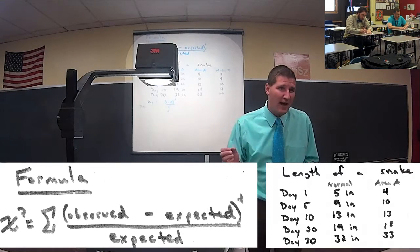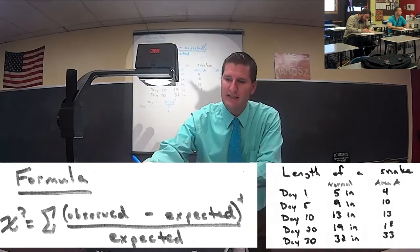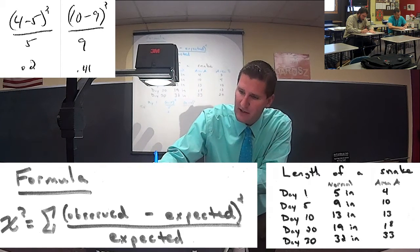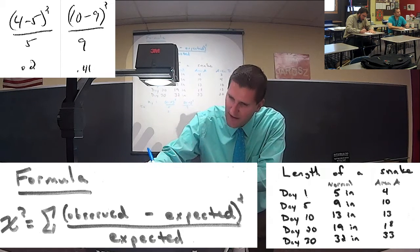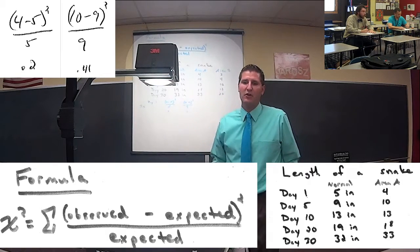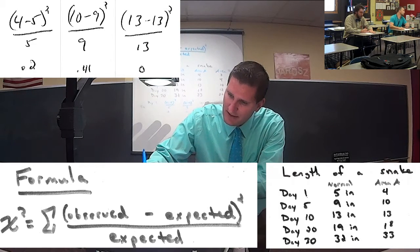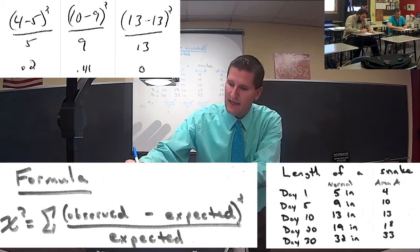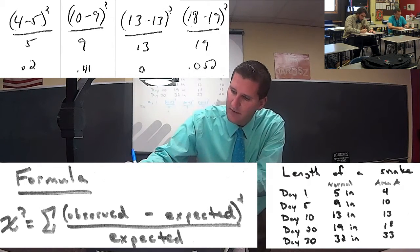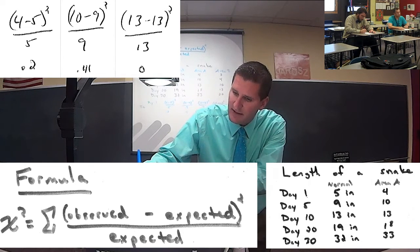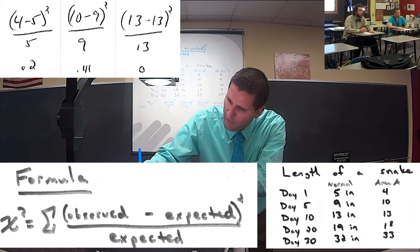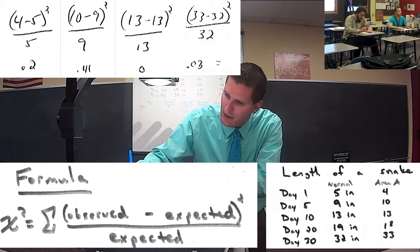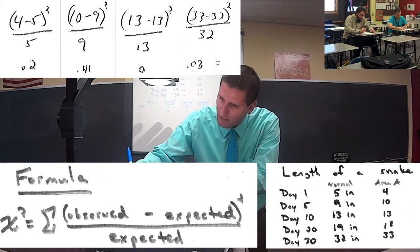Once you get above 0.5, things start to get a little shaky. Now for Farmer Joe's five-day size: 10 minus 9 is 1, squared is 1, divided by the expected value of 9, gives us 0.11. Day 10: 13 minus 13 is 0, squared is 0, divided by 13, gives us 0. Day 20: 18 minus 19 is negative 1, squared is 1, divided by 19, gives us 0.052. Day 30: 33 minus 32 squared is 1, divided by 32, gives us 0.03.